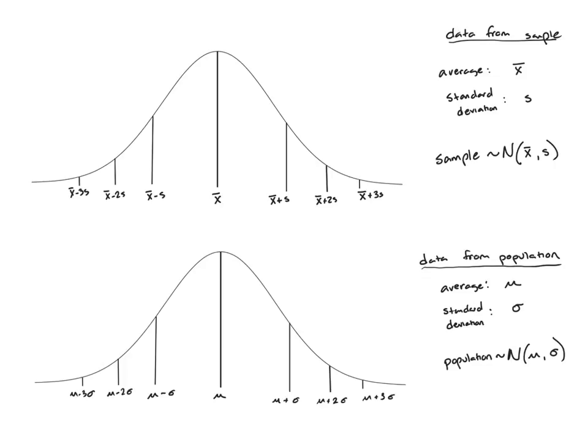This has gone ahead and overview the difference in notation we would use for data from a sample versus data from the entire population in terms of what it looks like on the normal distribution itself.